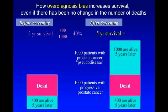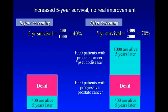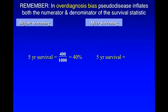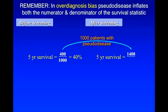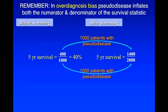Five years later, the picture looks like this. Again, there are 600 deaths. But what's the five-year survival? How many people are alive? At the end of five years: 1,400. Out of how many? 2,000. The new five-year survival is 70%. You can see there's increased five-year survival, but there's no real improvement — on either side of the screen, 600 patients have died. All that's happened is the patients with pseudo-disease have inflated both the numerator and the denominator of the survival statistic. In over-diagnosis bias, pseudo-disease inflates both the numerator and the denominator: 1,000 patients get added to 400 to become 1,400, and 1,000 more are added to the denominator to go to 2,000, giving a new five-year survival of 70%.